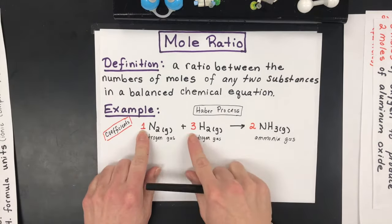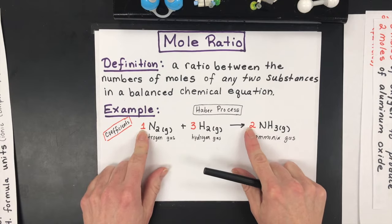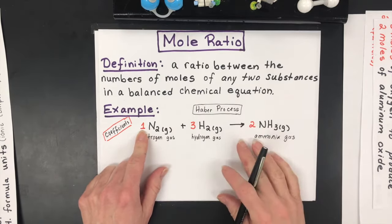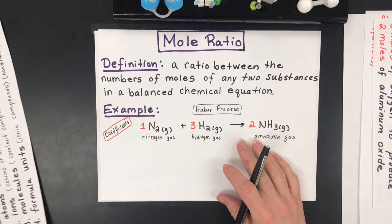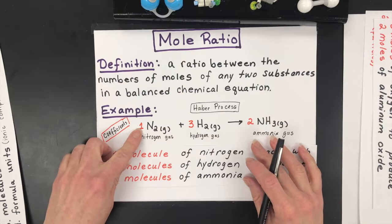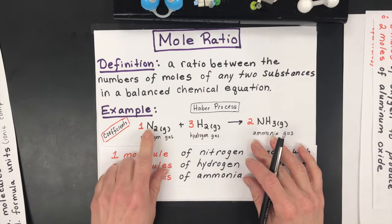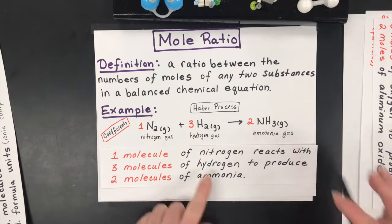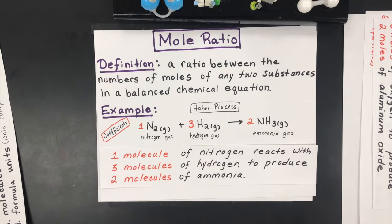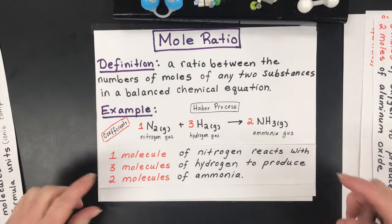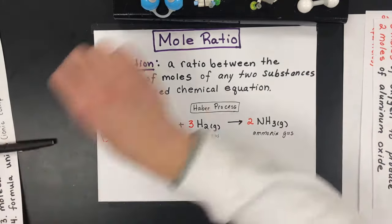The coefficients that are in front of these balanced equations are going to be these things called the mole ratio. But before I even get into the mole ratio, I want to just explain this reaction using molecules first. So the coefficient of one says there's one molecule of nitrogen. It's going to react with three molecules of hydrogen and produce two molecules of ammonia. Before we do mole ratios, I want you to see this with a model kit, what that really means.